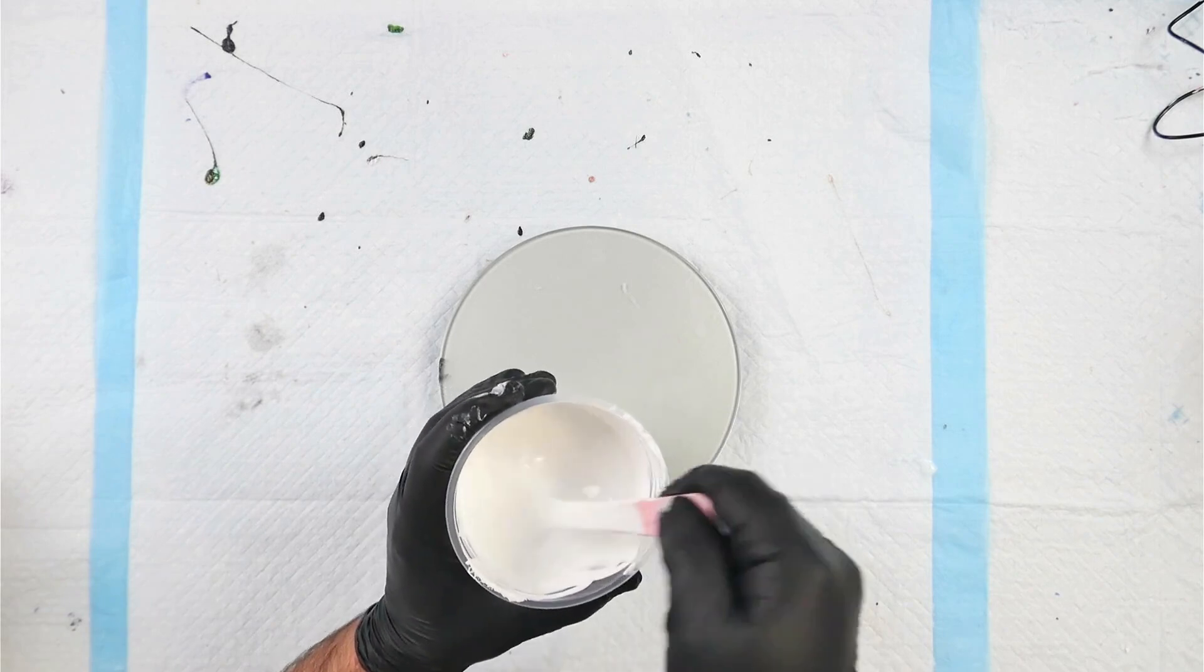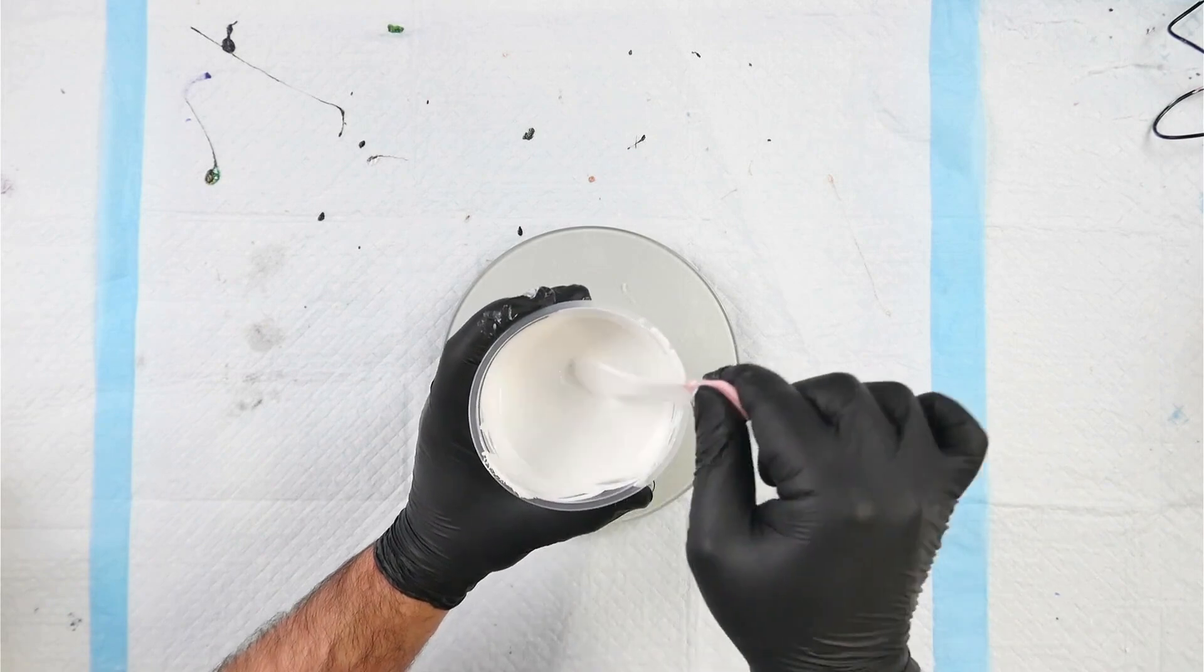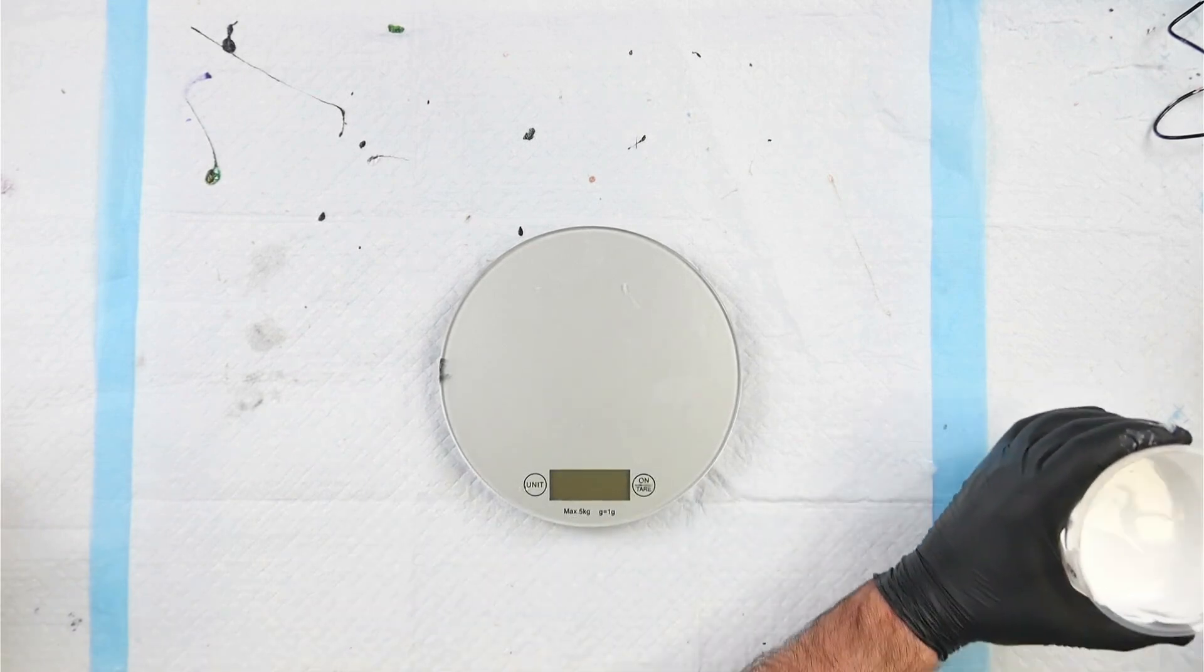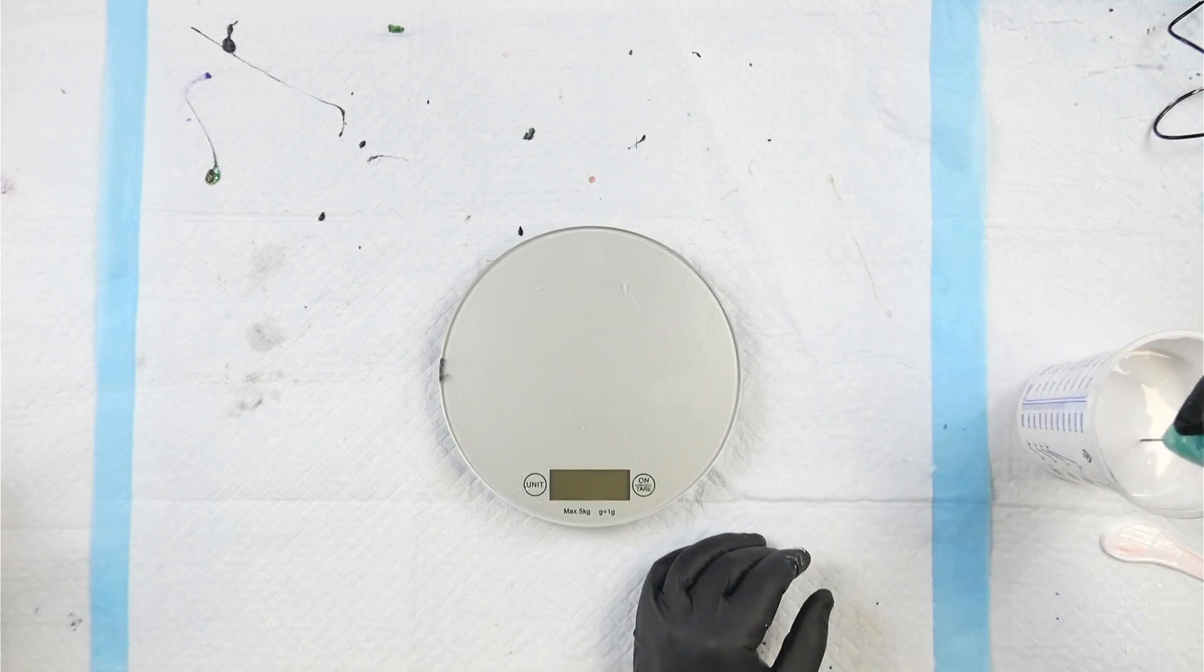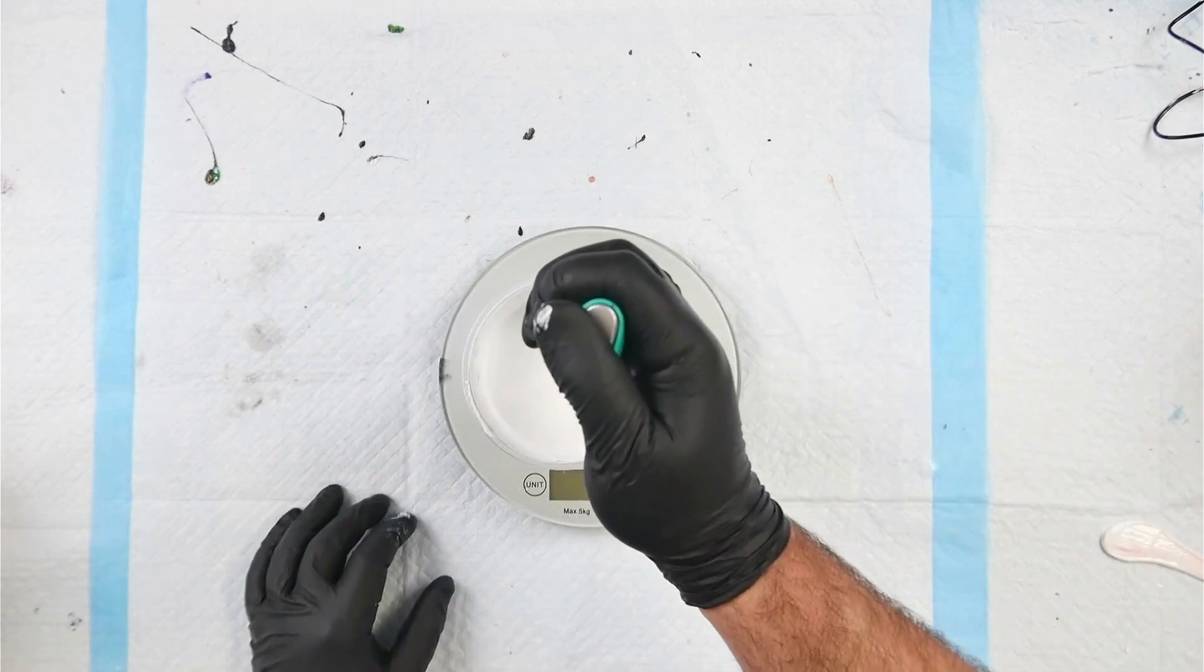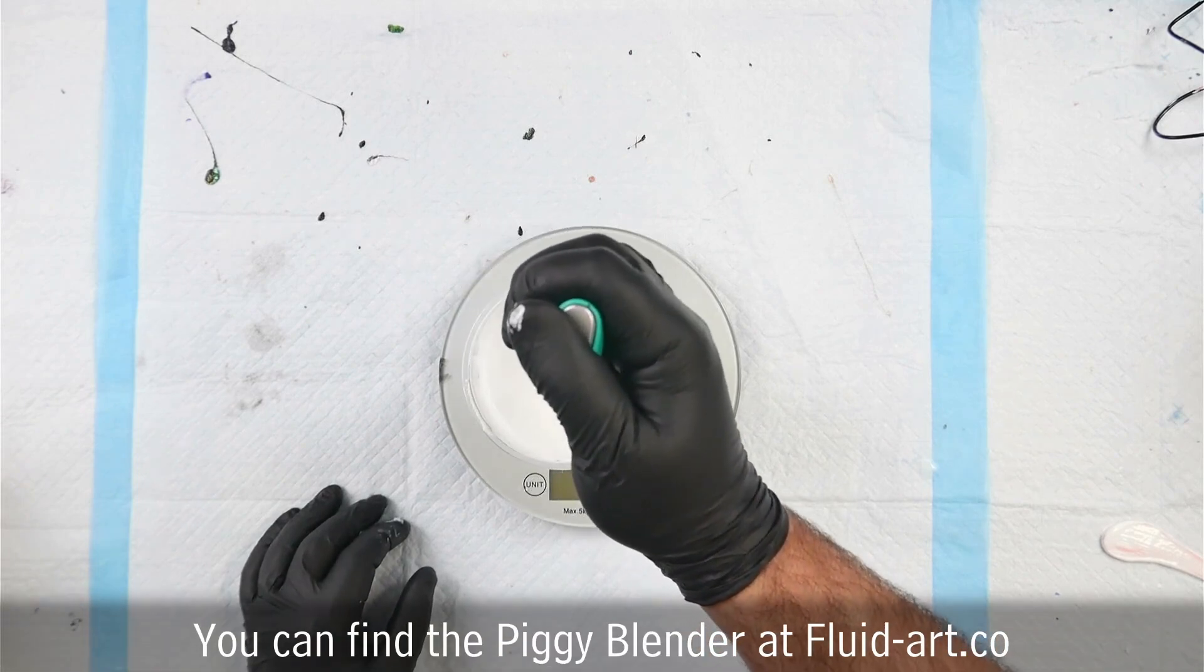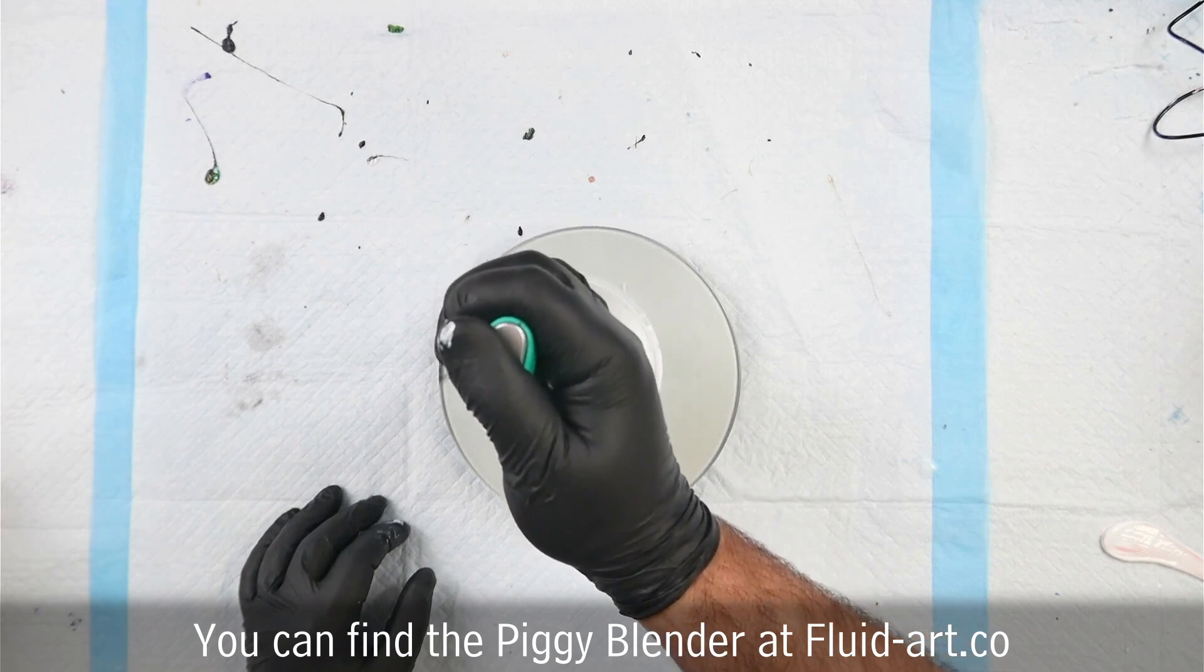When stirring to eliminate bubbles, try to stir in a circle rather than coming up and out of the paint, and the more paint you have the less likely you are to get bubbles. Just to eliminate any further bubbles I'm going to use my Piggy Mixer just underneath the surface of the paint. If you don't bring it up near the surface it can't incorporate any bubbles because there's no air in the actual paint. As long as it's submerged you're not going to have any troubles with lumps or bubbles.